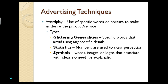Glittering generalities are specific words used to avoid expressing any actual details — things like 'best of all time,' 'better than last year,' or 'never been better.' It doesn't really explain anything; it just makes a vague comparison. The term 'glittering' comes from the expression 'all that glitters isn't gold.' Statistics: numbers don't lie, but people do. Numbers are used to secure perception. Think of 'four out of five dentists recommend it for patients who chew gum.' Did they ask only five? Statistics often leave more questions than answers, but numbers sound convincing because they appear concrete.